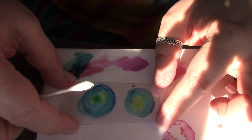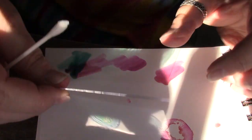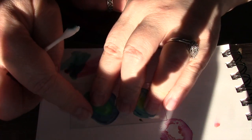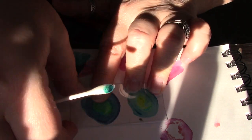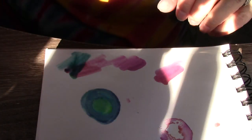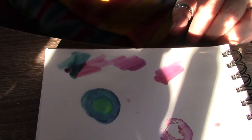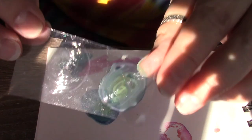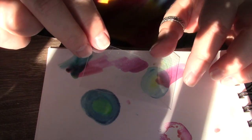Now what I discovered by accident is if you take this while it's wet and turn it over, you can actually do a monoprint with wet Sharpie. Look at that! It almost completely comes off of here. That is the coolest thing on the planet.